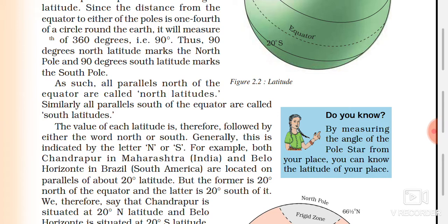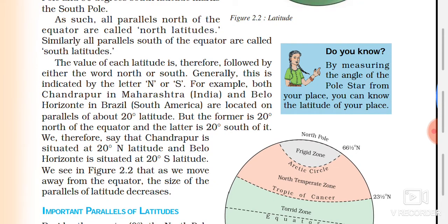And if you are talking about the southern side, then it is south latitude. For example, both Chandrapur in Maharashtra and Belo Horizonte in Brazil are located on parallels of 20 degree latitude. But the former is 20 degrees north of the equator and the latter is 20 degrees south of it.